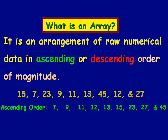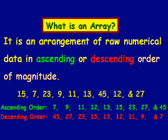Another way we could set up an array is to reorder the data in descending order. In descending order we start with the highest number, which is 45, and we work our way down to the lowest number in this set of data, which happens to be 7.